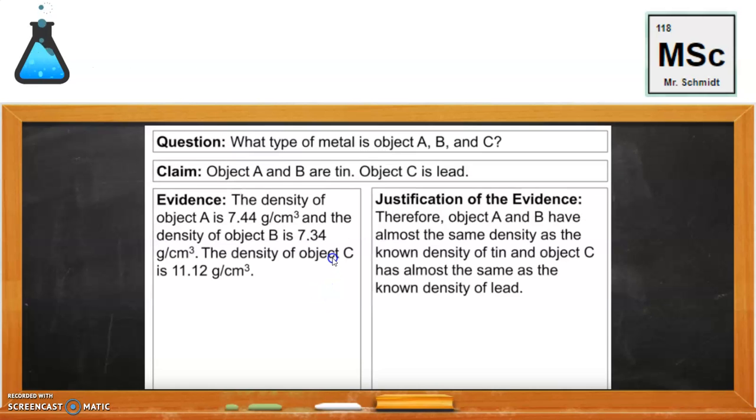So, then student maybe number two, or you turn it back in after that, and you have your same question, same claim. But this time you add in object C's density is 11.12 grams per cubic centimeter. And your justification, you added, therefore, object A and B have almost the same density, as the known density of tin, and object C has almost the same density of the known density of lead. Again, I think that this is a little bit lacking because there is enough difference that they could be different metals. But I think I'd hand it back to you again and say, why don't you try one more time? I think this last one is probably the best, would be the best lab argument.